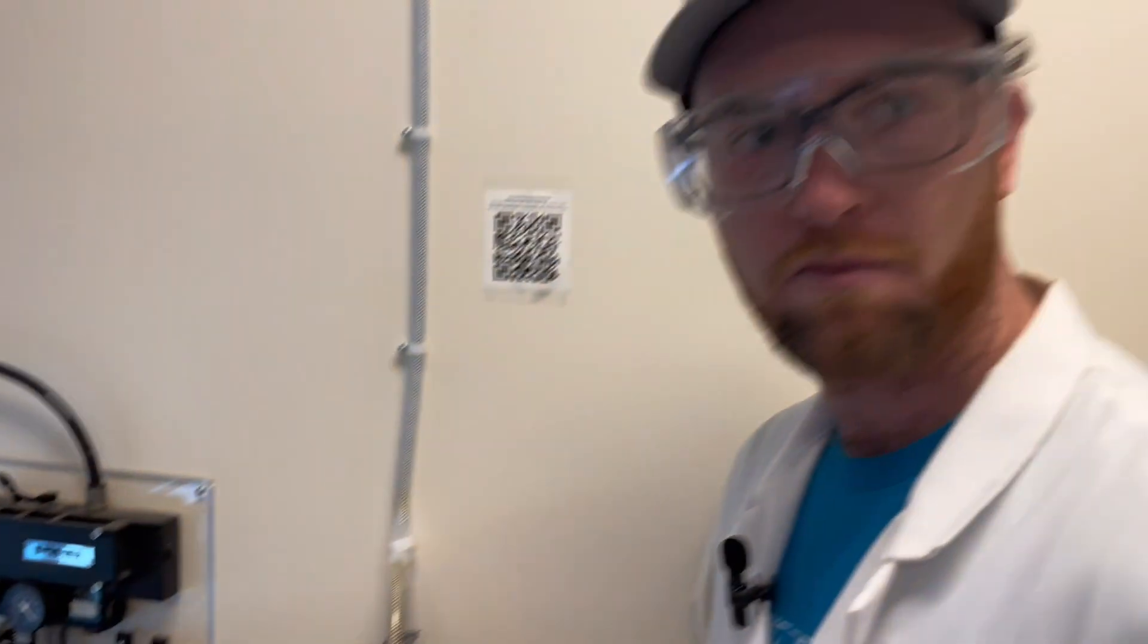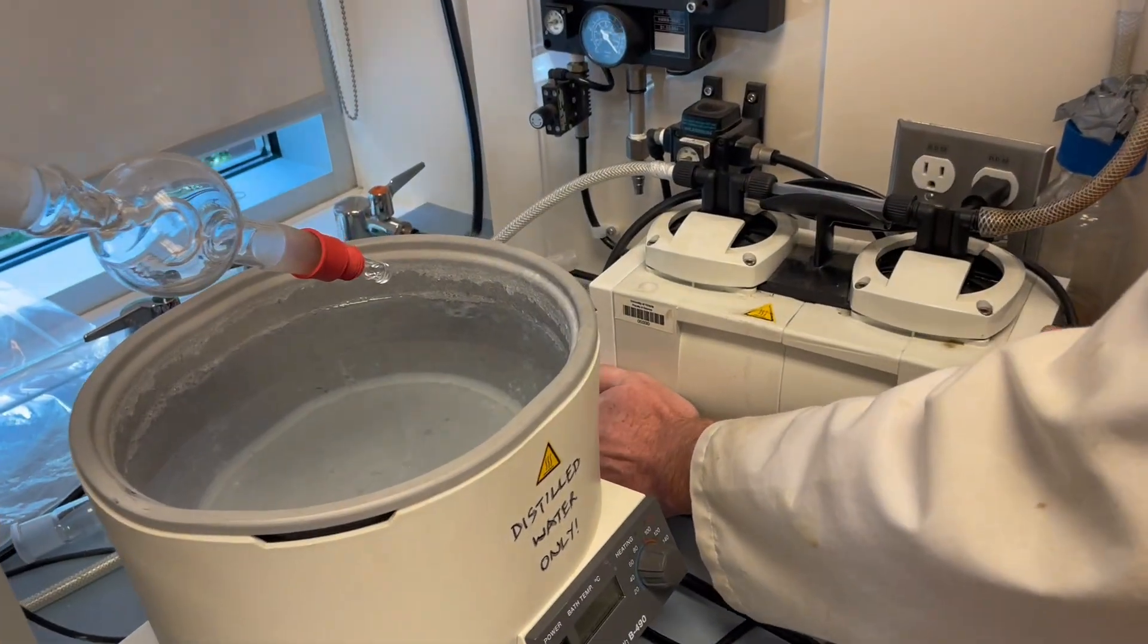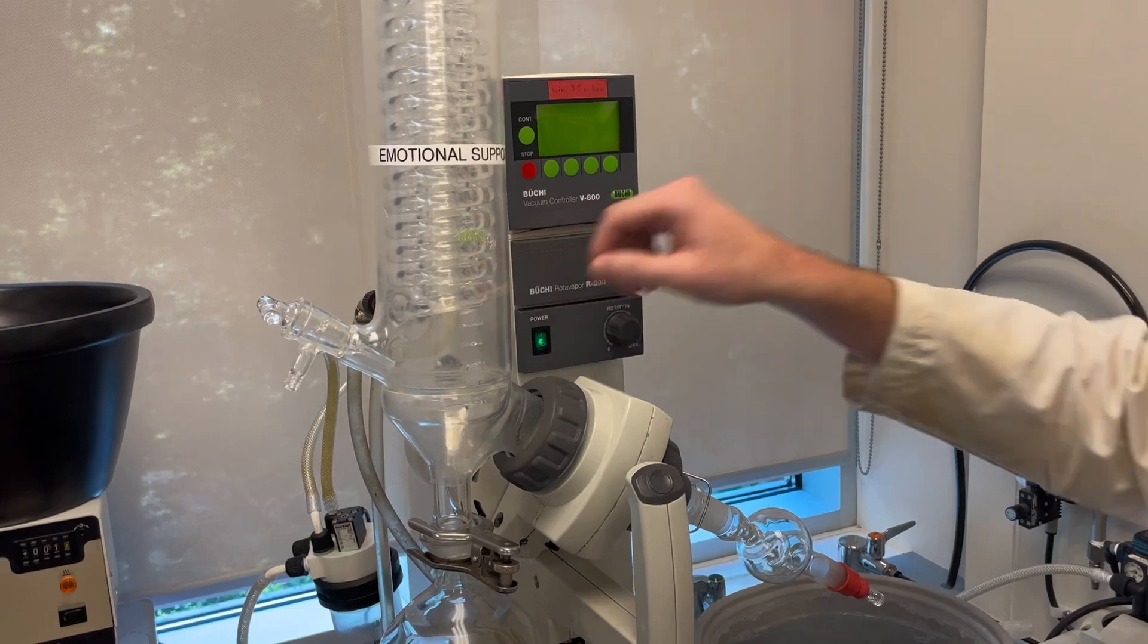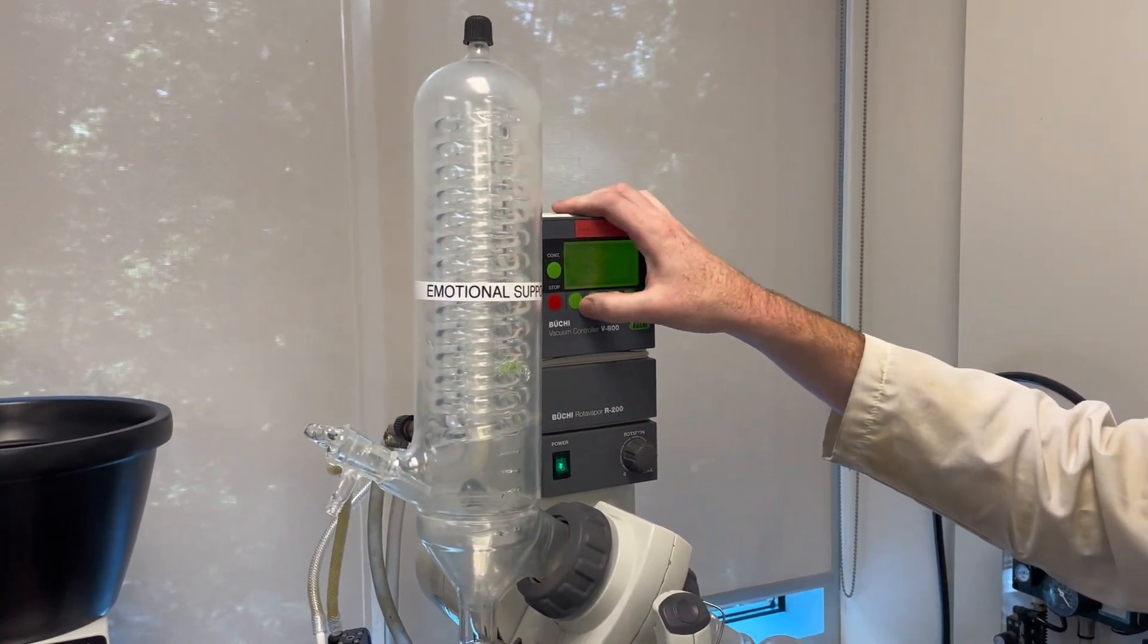Now to begin the rotary evaporation process, turn on the vacuum pump, turn on the rotary evaporator, ensure that we're closed to the atmosphere, and hit run.